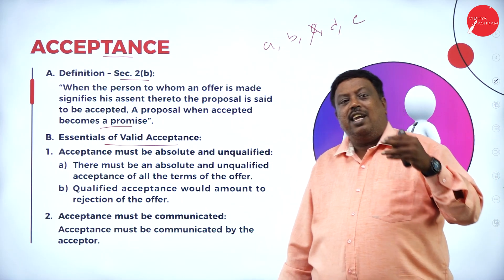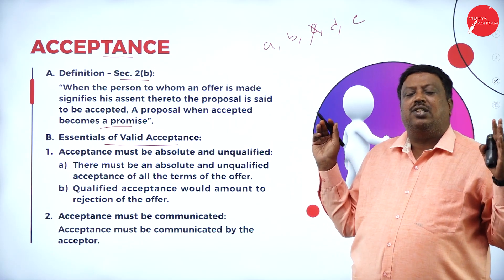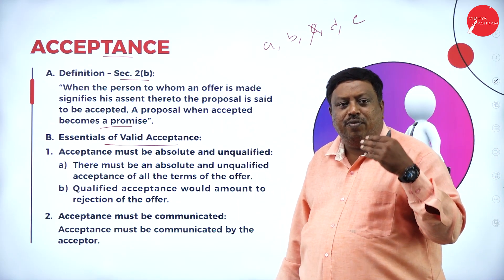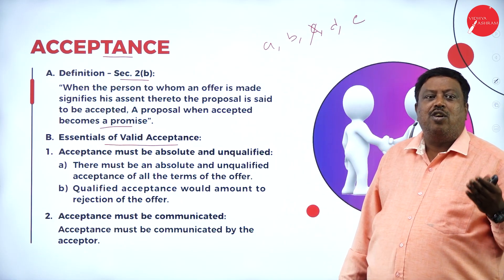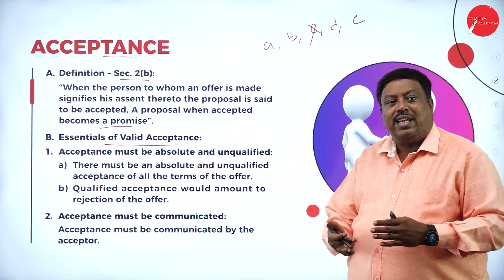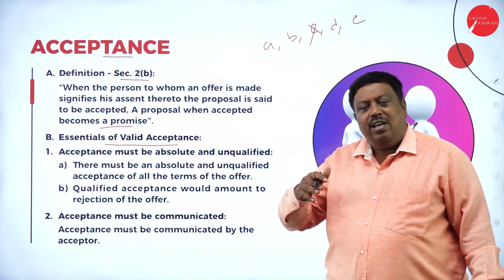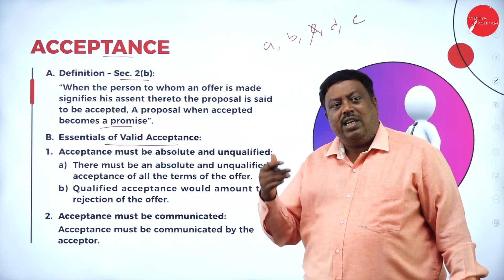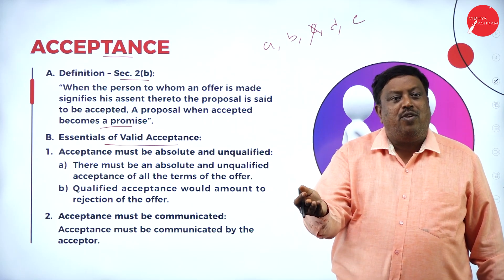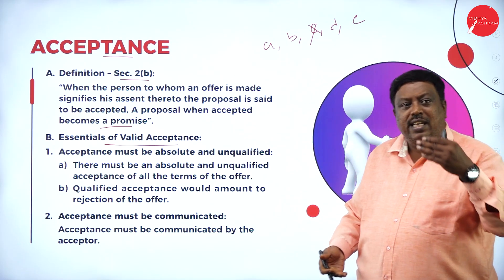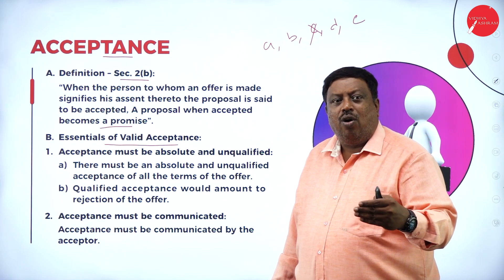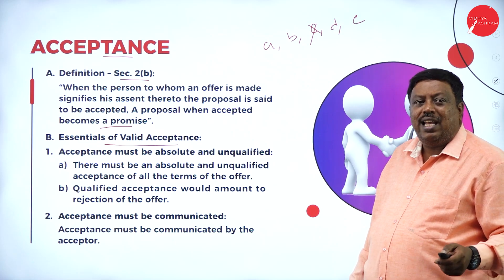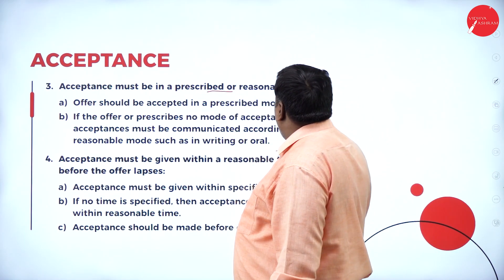Second essential: acceptance must be communicated. Keeping it in your mind — thinking 'I will buy this product' or 'nobody will buy that, I will come and buy tomorrow' — if you have not expressed your view to the person who is offering to you, that cannot be accepted as a contract, because you have to communicate. You must say: 'I am going to buy this product tomorrow at this time, I am going to pay this amount.' When you make the initial payment for that product, it shows you have agreed to all terms and conditions and promised to buy. If you don't communicate, that cannot be called acceptance.